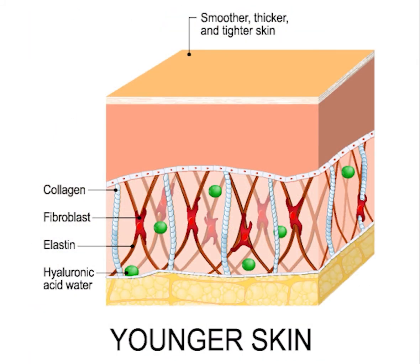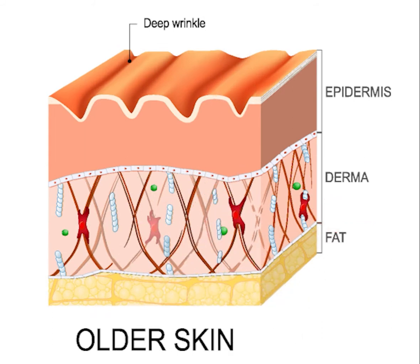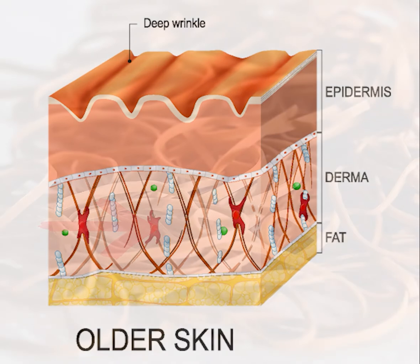As we age, the number of fibroblasts that make collagen and elastin slow down and decrease altogether. The earliest signs of aging begin in the elastin fibers. As we age, these strong healthy fibers begin breaking down and degenerating — as they become rigid and thick, they lose their elasticity and snap.